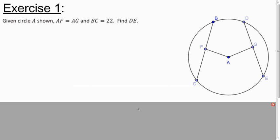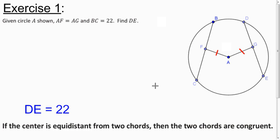Okay, now let's apply what we learned in these theorems. So here we have circle A. We know that AF equals AG. And they tell us that BC is 22. So what's DE? Well, they tell us AF and AG are the same. And so that must mean that these chords have the same length. Because if the center is equidistant from the two chords, the chords are congruent. So DE is also 22.